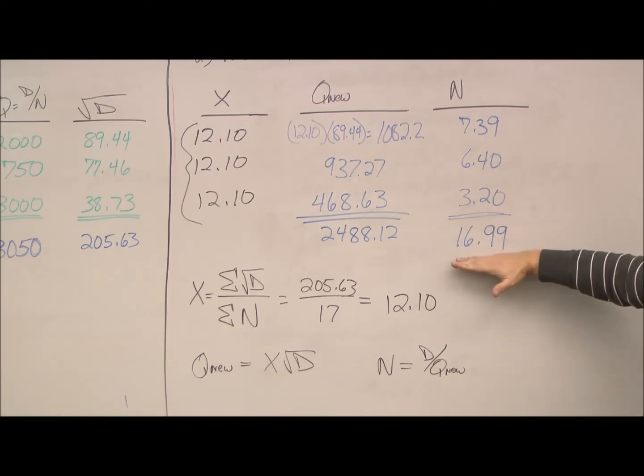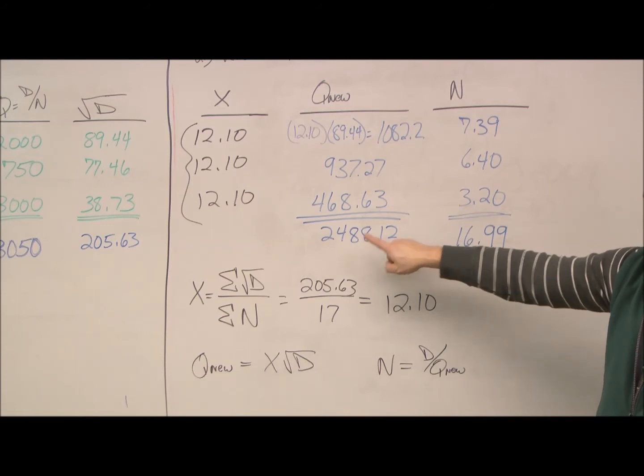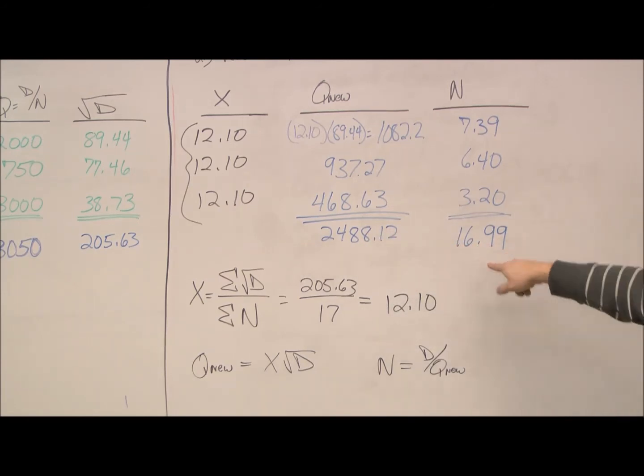But, our ordering costs have remained at 17 orders per year. The same annual ordering costs has remained the same. We've reduced HC. OC remains the same.